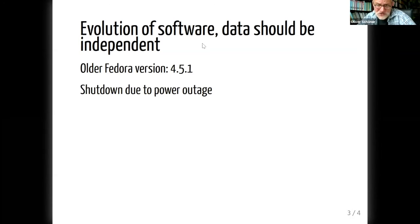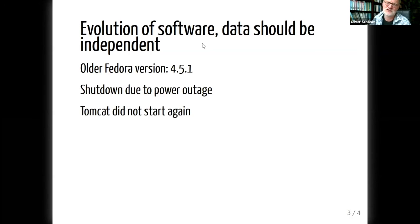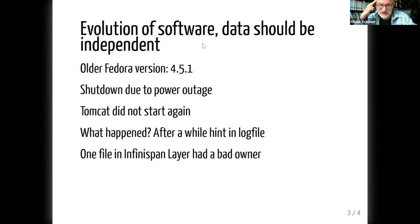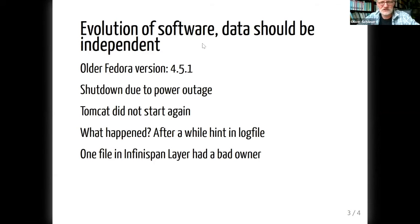And we ran into a serious problem. One day, we had a power outage, and the whole server — which was a virtual one — was shut down without any warning. Then it started up as it should, but the Tomcat containing the Fedora application did not, and I had no idea why. I checked the log files about what happened, and I didn't find anything. Only after an hour or so I found the hint. The problem was one file in the InfiniSpan layer, which is used by ModeShape in older ModeShape versions, had a bad operating system owner. It had not the operating system user Fedora as owner, but was owned by root, and then it couldn't be read by the application, and the whole Tomcat did not start.